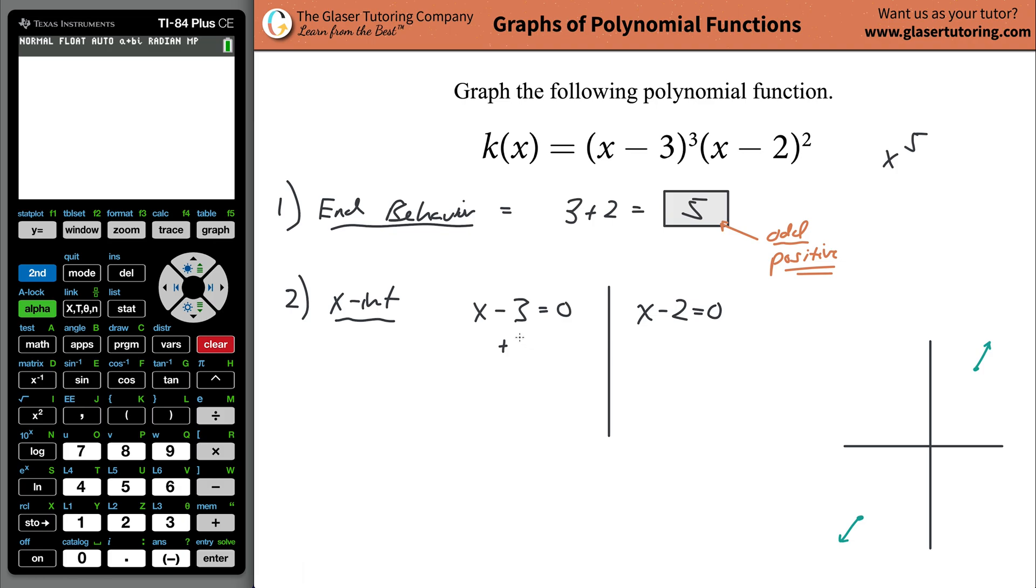So that's why I'm doing what I'm doing. To solve this, you simply add three to both sides. So x is going to be positive three, that's one x-intercept. And the next one, you're going to add two to both sides, and x is going to equal positive two.